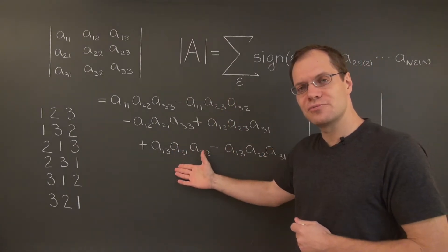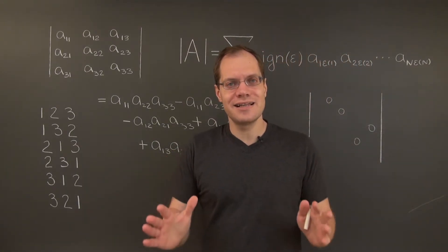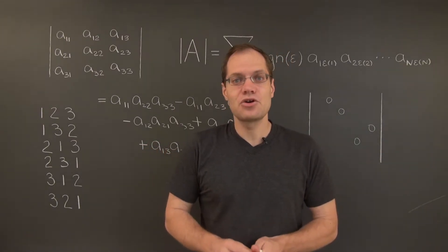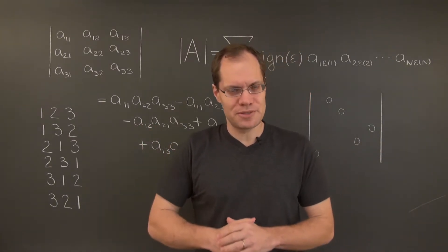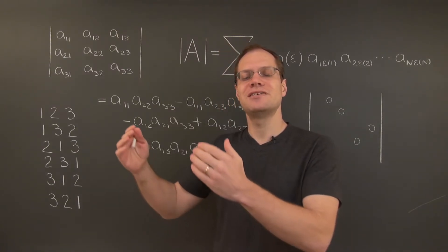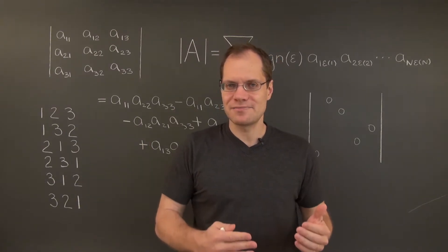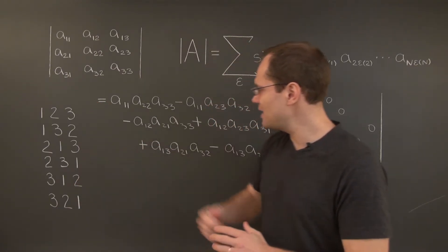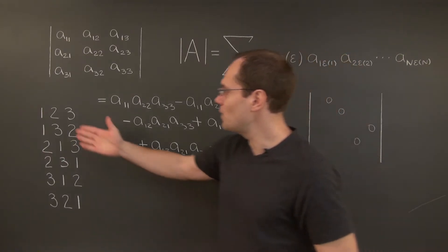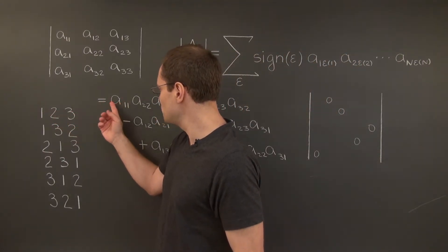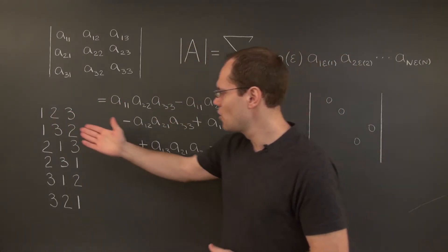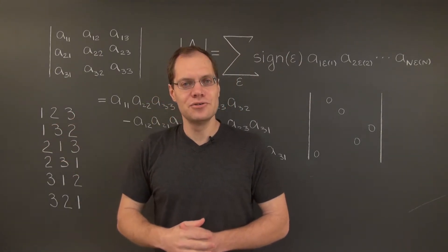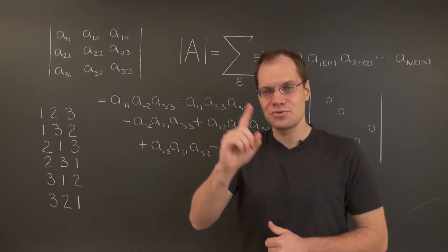Now we understand the terms. The only thing that's left is the sign, and the sign is very simple — it corresponds to the parity of the permutation. If the permutation is even, it's a plus. If the permutation is odd, it's a minus. So let's see what we have: 1, 2, 3 is an even permutation, so there is a plus. And 1, 3, 2 is a single switch away from 1, 2, 3 — an odd number of switches — so it's an odd permutation, giving a minus.